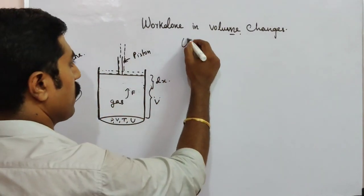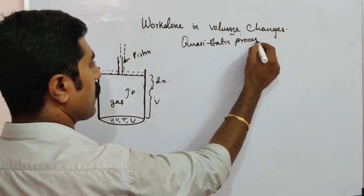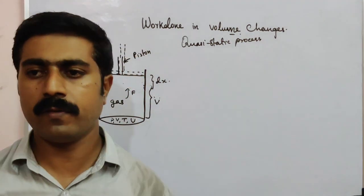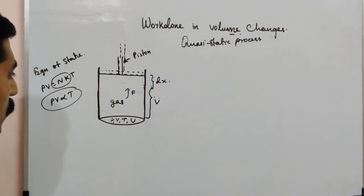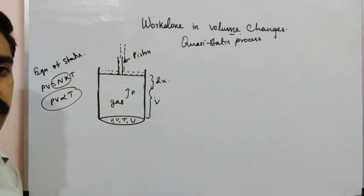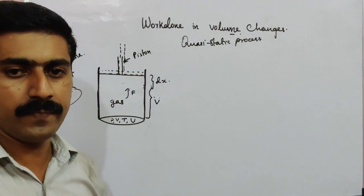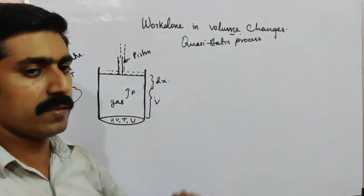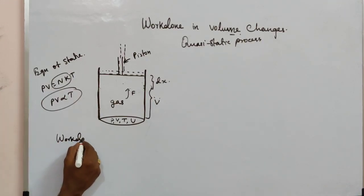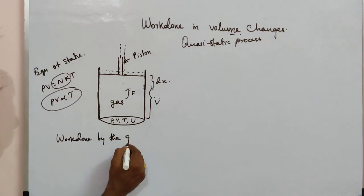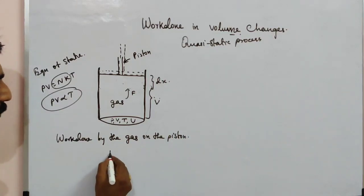Quasi-static process — a very slow process over a stage-by-stage path. We can measure all the state variables at each stage. So the work done in volume changes: what is the volume? It is the gas volume.